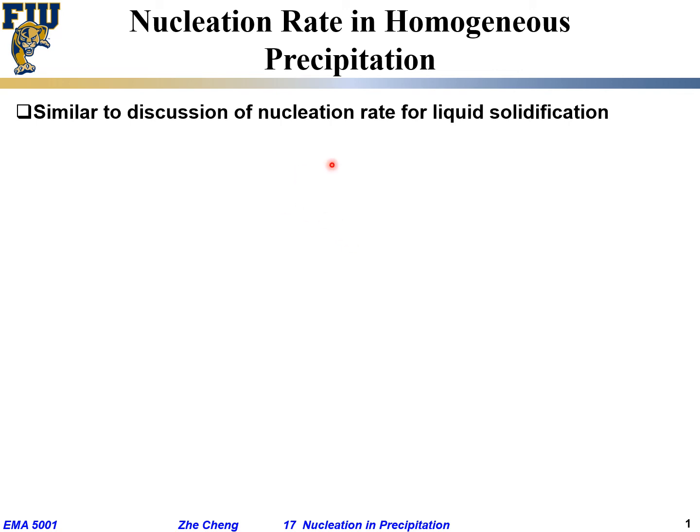Okay, so as we said, we are going to talk about homogeneous precipitation. It happens everywhere randomly within the matrix material. We want to know something about nucleation rate, and this we are discussing in a way similar to what we said before for liquid solidification.